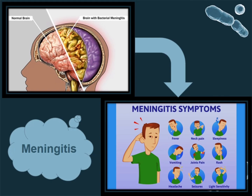Escherichia coli can cause several diseases such as diarrhea, urinary tract infection, pneumonia — which is water in the lungs — and meningitis, which is a pain inside the skull due to a gap in the meninges. Symptoms of meningitis include fever, neck pain, sleepiness, vomiting, joint pains, etc.